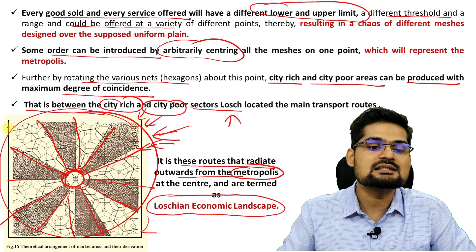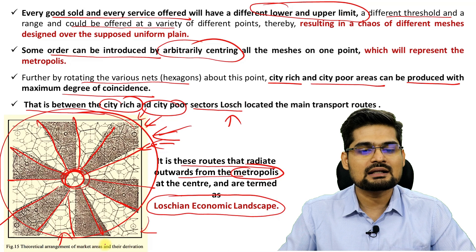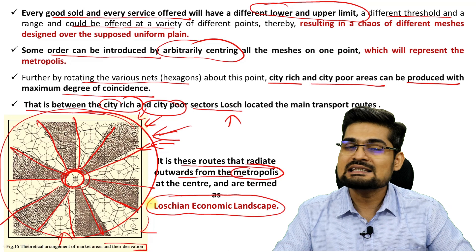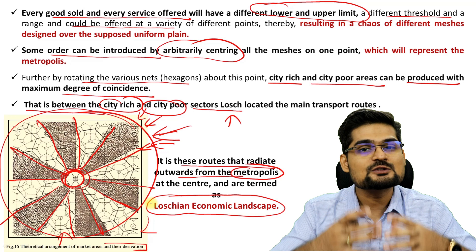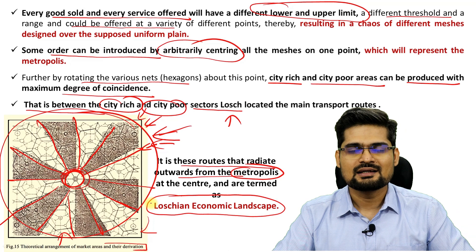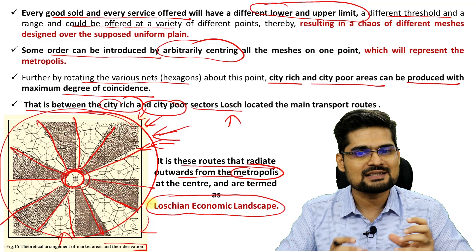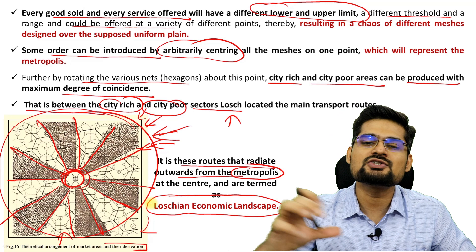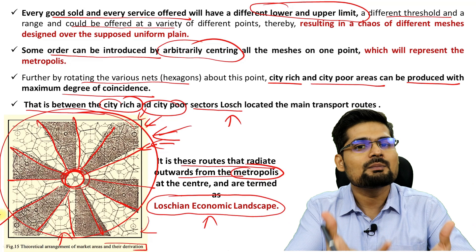This entire theoretical arrangement of market areas and their derivations was created in the Löschian model — a very complex model. It was criticized because it tries to account for a complexity of factors: demand, locational equilibrium, the difference between city-rich and city-poor, and transportation routes along which the Löschian economic landscape develops — all making a complex urban landscape.